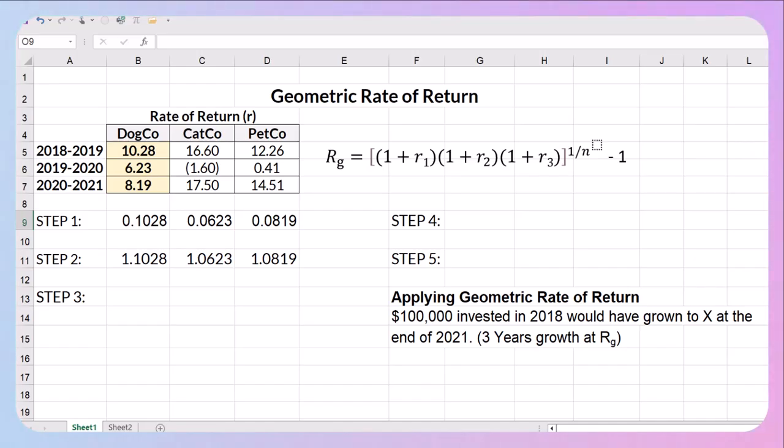Now I'm going to work on my brackets which requires me to take the three values in step two and multiply them together. So I'm just going to say equal the sum of this one times this one times this one, close my parentheses and hit enter.